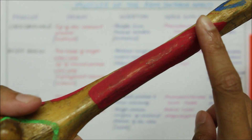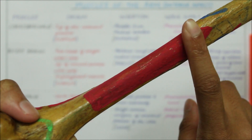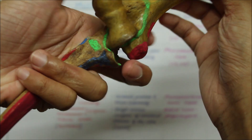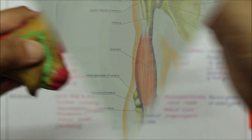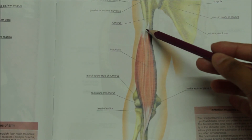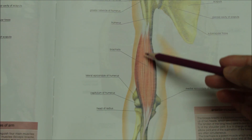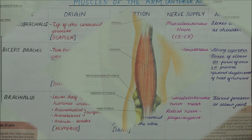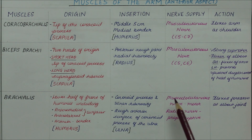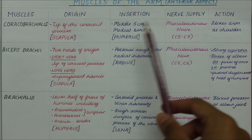As a whole, the brachialis originates from the lower half of the anterior surface of the humerus — including the anterolateral surface, the anteromedial surface and the anterior border — and inserts into the coronoid process and the ulnar tuberosity right here. Looking at its nerve supply, the brachialis is supplied by the musculocutaneous nerve for motor supply, while the radial nerve gives it a proprioceptive supply.